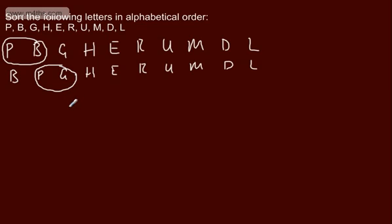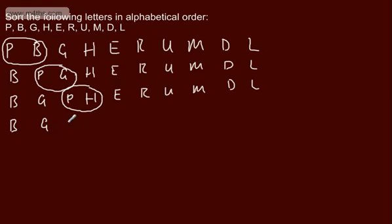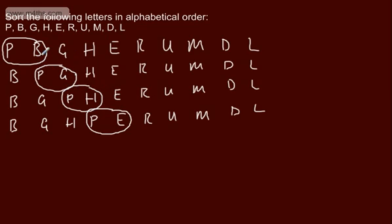Next comparison: P and G. Do we need to swap these? Yes. List: B, G, P, H, E, R, U, M, D, L. Next: P and H. H comes before P, so yes, we swap. Considering P and E: we need to swap those too. List becomes: B, G, H, E, P, R, U, M, D, L.